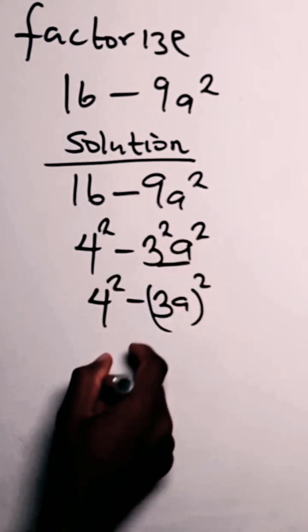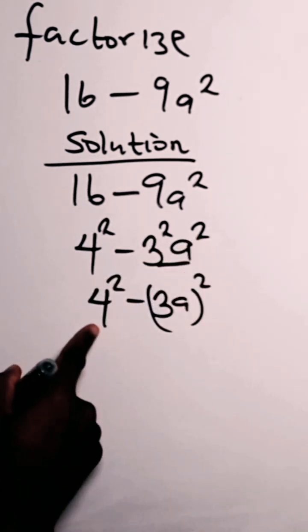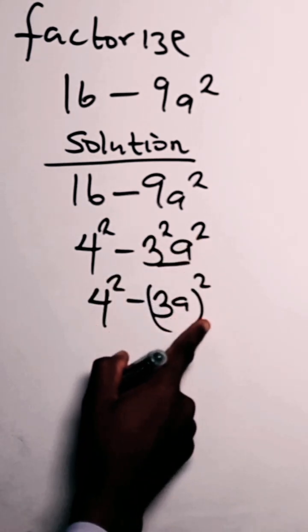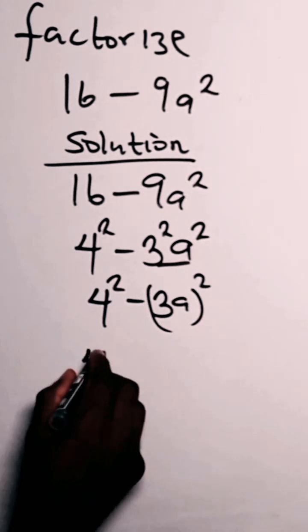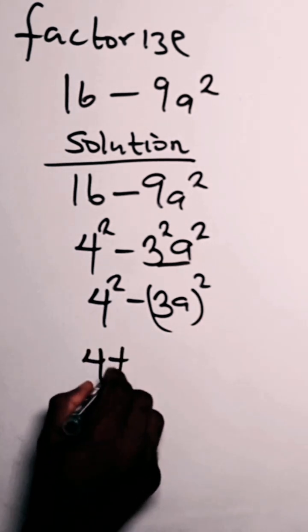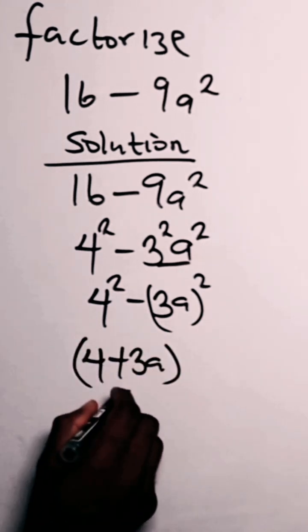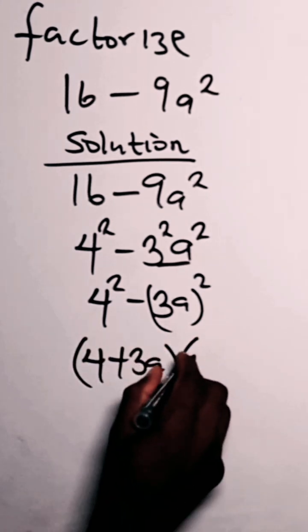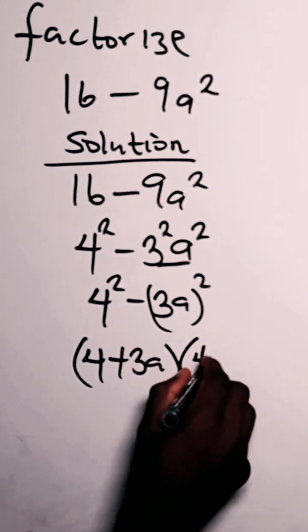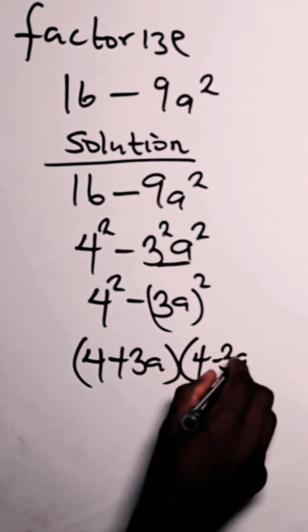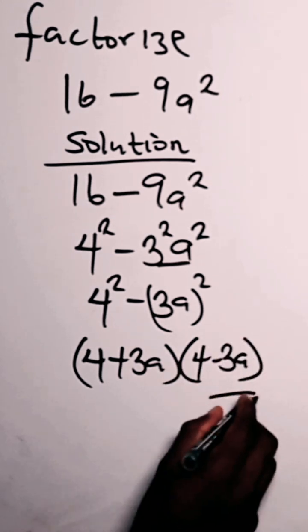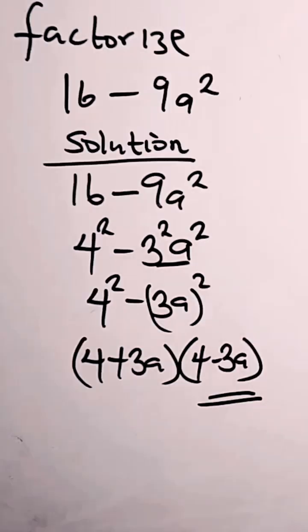We pick out one. So we can apply difference of two squares here. So we have this as 4 plus 3a, times 4 minus 3a. Thank you very much.